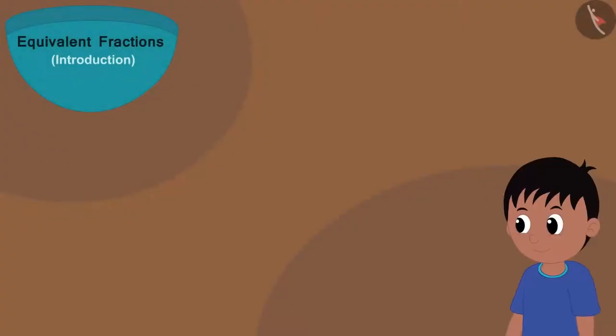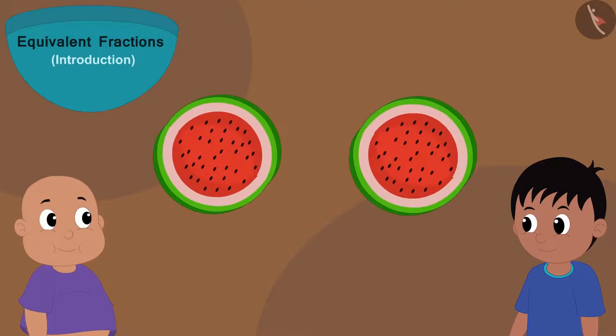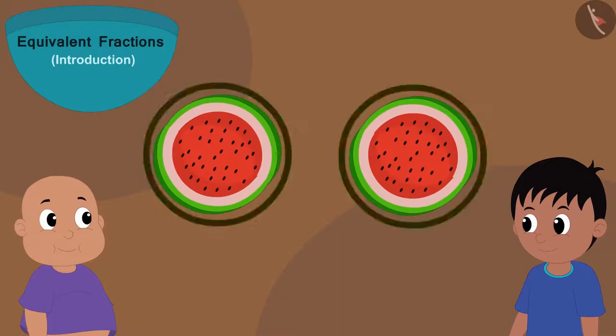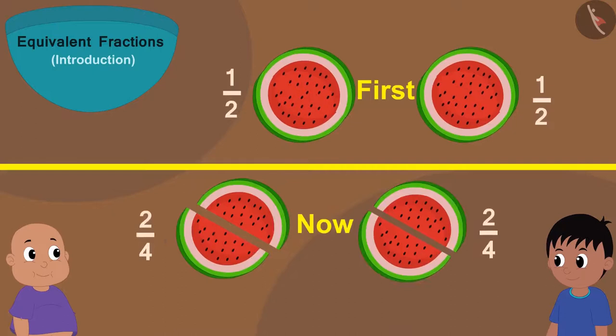Earlier, Raju and Bablu were getting one part out of two equal parts. And now, there are four parts of the watermelon and they both are getting two parts each.